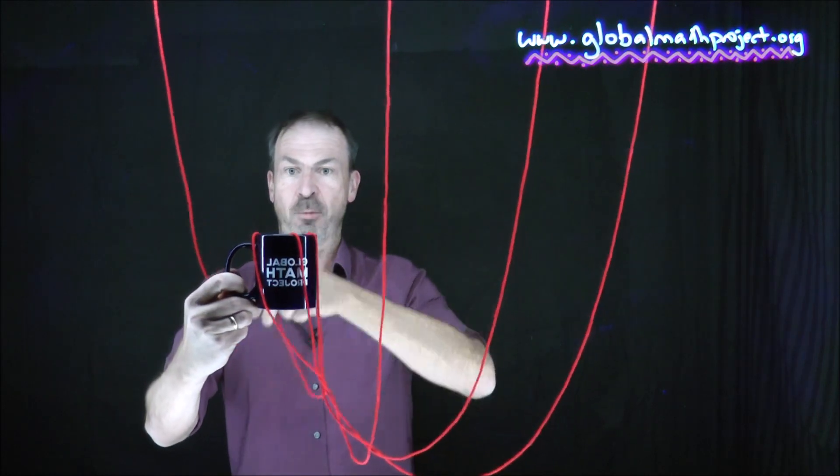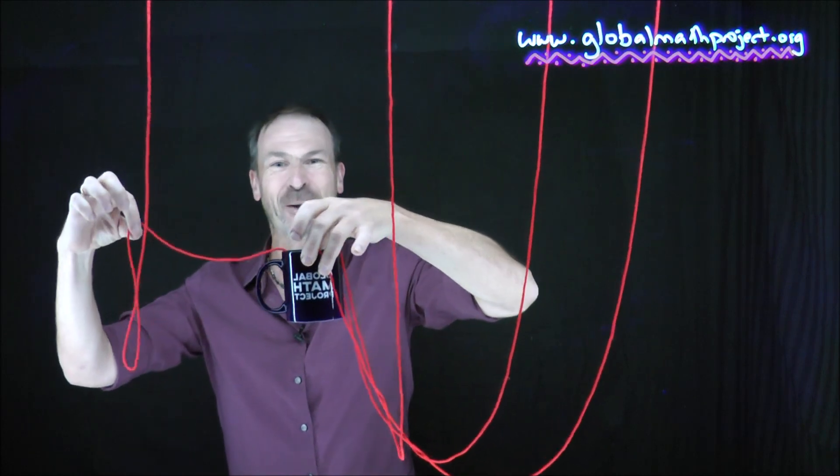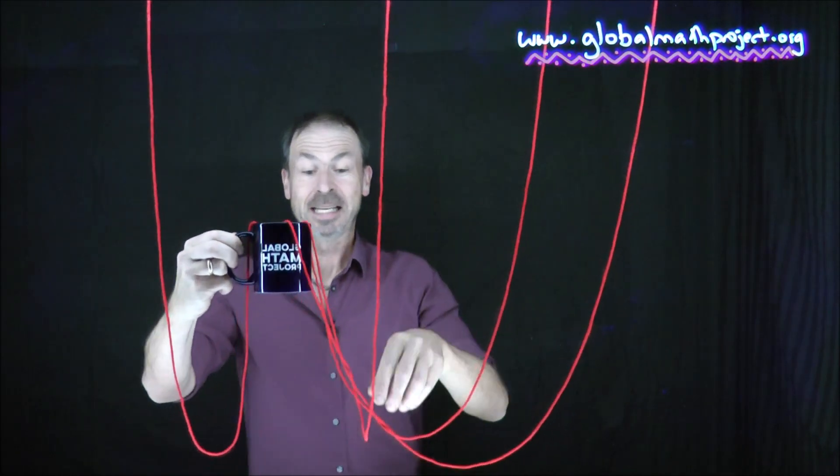For example, I might pick up this one here, move it around the mug. So I had to move my hands around there. Oh, look, and I untangled one string. I've still got these three strings tangled. So the challenge is, can you, without moving the mug, pick the strings up around the mug and untangle them?